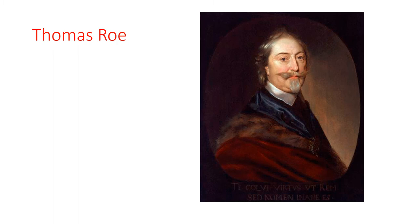In 1717, the Mughal ruler Farrukhsiyar issued a farman giving the British East India Company the right to reside and trade in the Mughal Empire. They were allowed to trade freely in Bengal, Bihar, and Odisha for a yearly payment of Rs. 3,000, and they also got additional rights to trade in the Deccan. The East India Company and other European companies made huge profits from trade concessions they got from Indian rulers. They bought goods — especially cotton cloth, silk, spices, salt, etc. — in India and exported them to Europe.